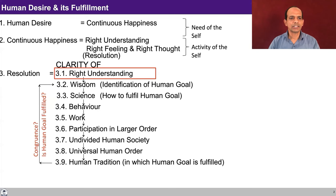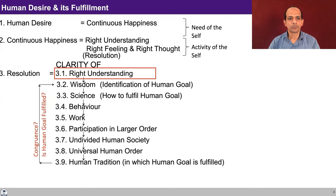This is something that we began with while discussing this course. The human desire is continuous happiness and it is fulfilled by right understanding, right feeling, and right thought. Right feeling and right thought put together can be termed as resolution. And presently, we are talking about right understanding — that is step one of resolution. While discussing right understanding, we discussed about the right understanding of human being. Now, we are going to talk about right understanding of the existence.